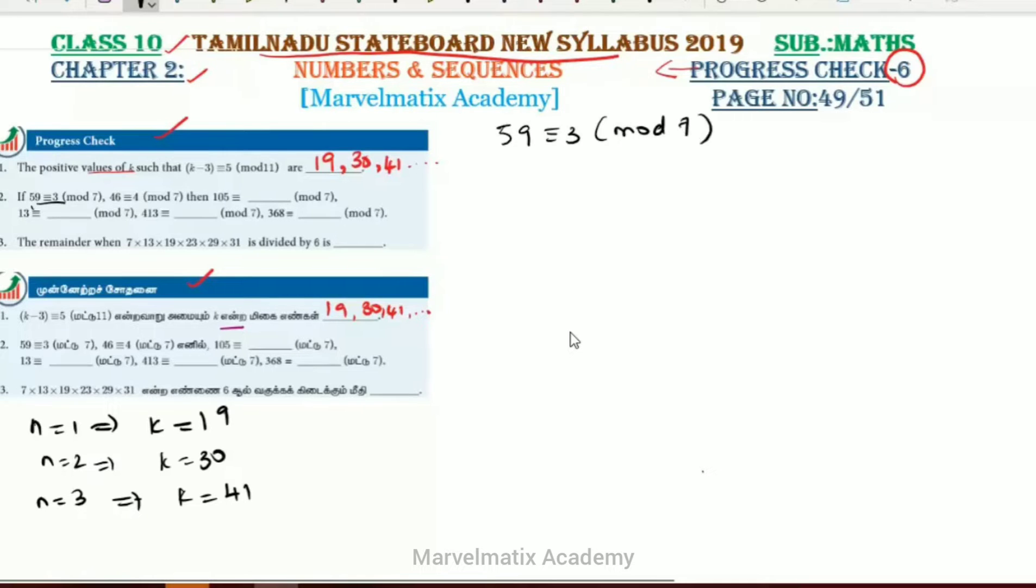What this means is 59 divided by 7. 7 times 8 is 56, so the remainder is 3. This is how it works.